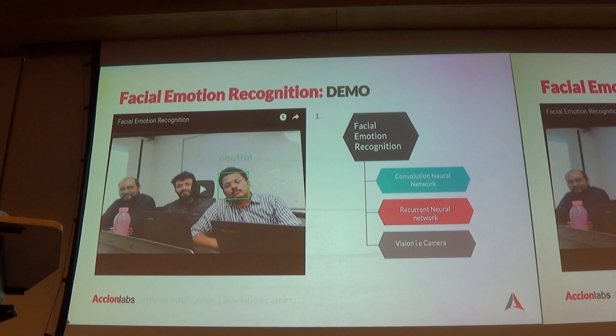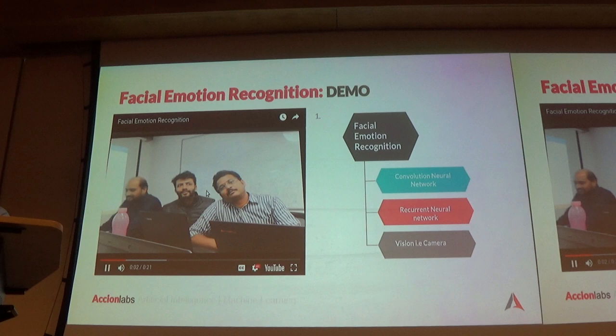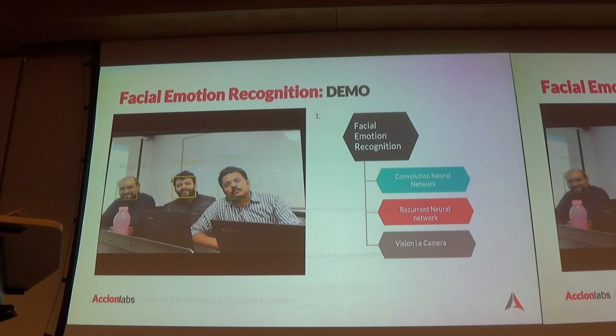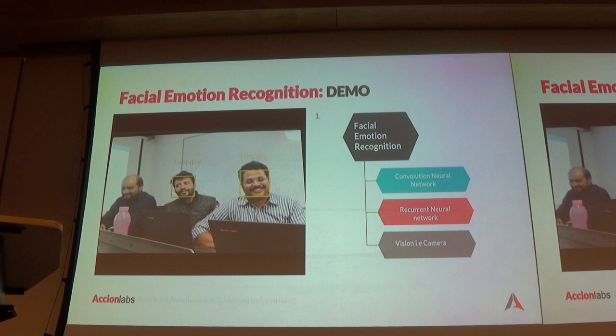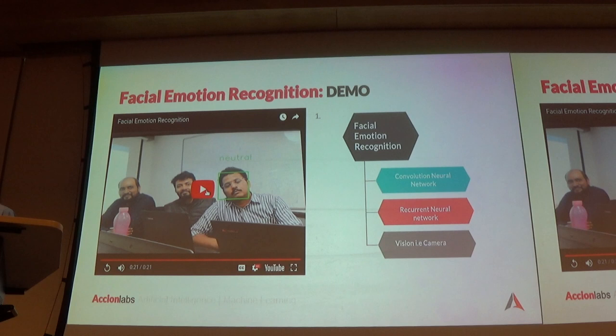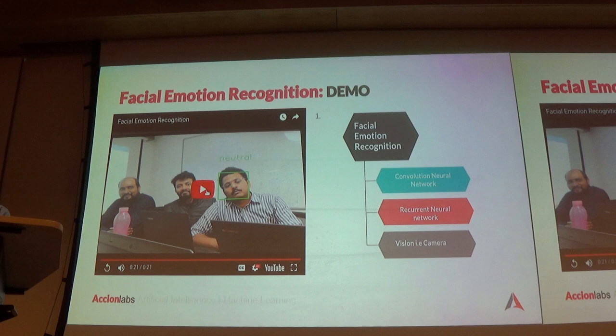This is our demo — it detects the emotion of a person. This is all pre-trained, nothing special happening in real time here. The technology behind this is convolutional neural networks, recurrent networks, and the vision camera. If we can create a smart camera, it is all about vision. If we can make the camera as smart as our eye, it can do everything.